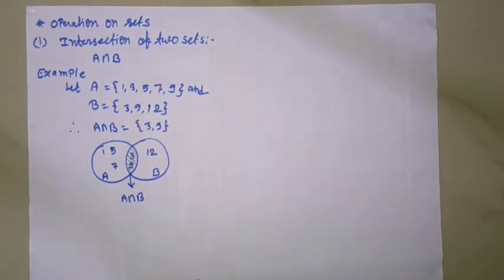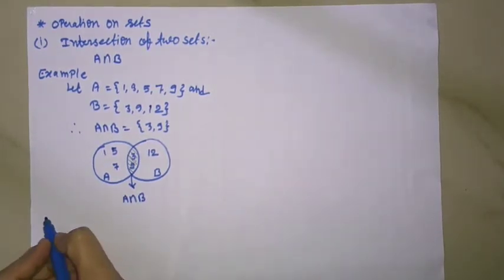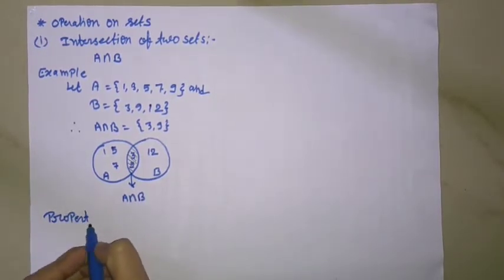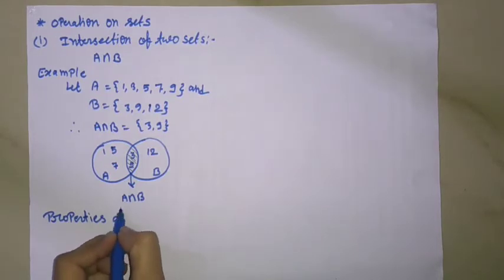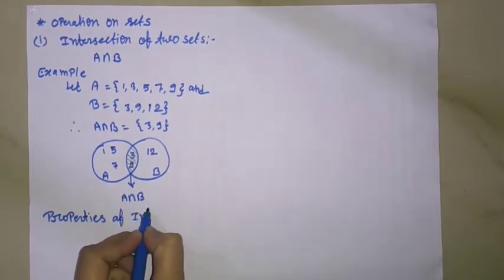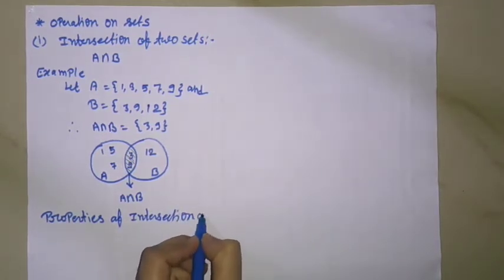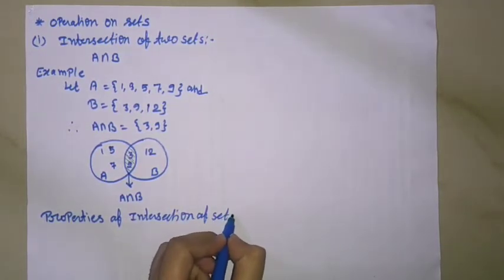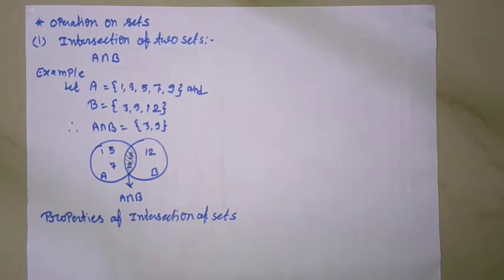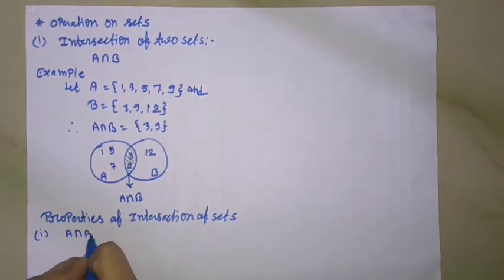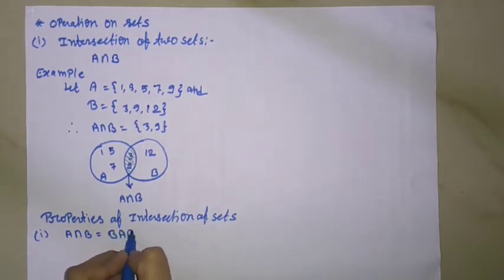Properties of intersection of sets. First property: A intersection B equal to B intersection A. This means intersection is commutative.